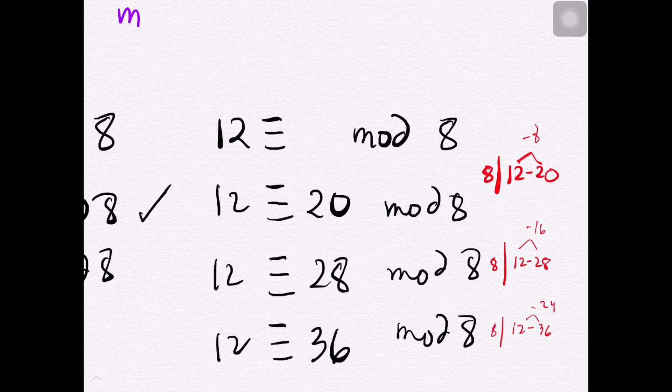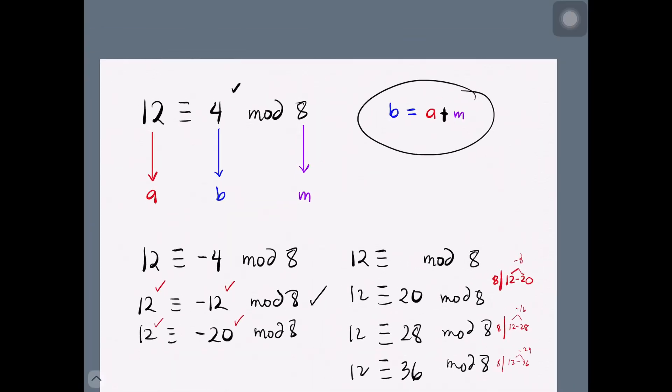So let's generalize the algorithm in getting the values for B. B will not just be equal to A plus or negative K, but this would actually be B equals A plus MK, where K would be an element of a set of integers. That would be 0, plus or minus 1, plus or minus 2, plus or minus 3, and so on.